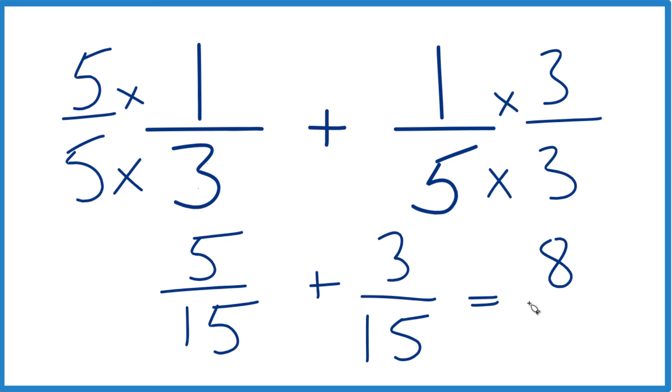And we just keep the denominator the same. Since these are the same, we don't change that when we add fractions. We end up with eight-fifteenths. So one-third plus one-fifth, that equals eight-fifteenths.